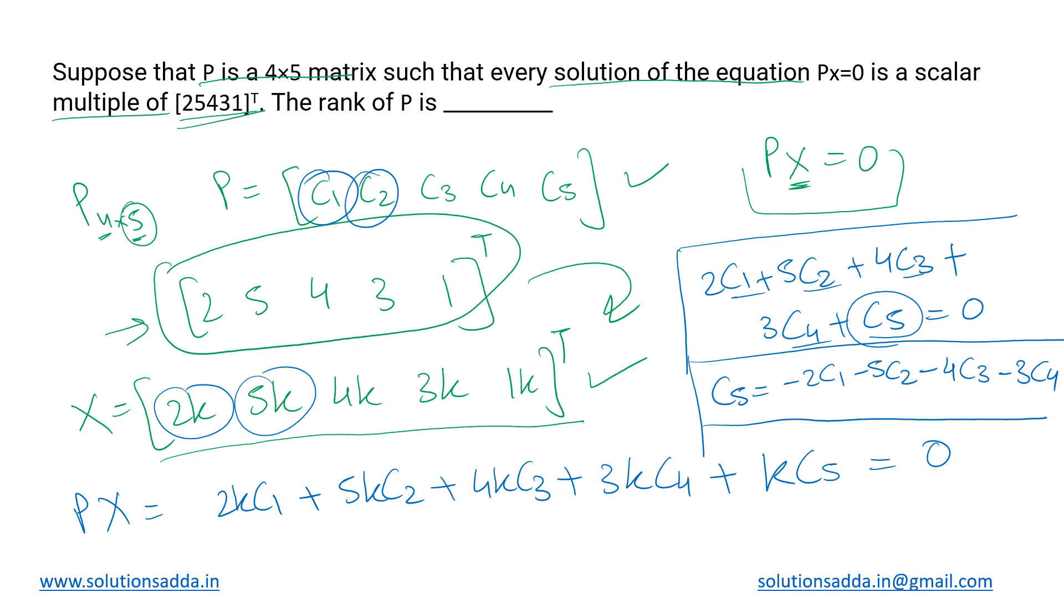What we just did is write one column vector as a combination of the other four column vectors. We can say that c5 is a linearly dependent column vector because its value depends on c1, c2, c3, and c4. So c5 becomes a linearly dependent column vector, and the four from c1 to c4 are linearly independent.